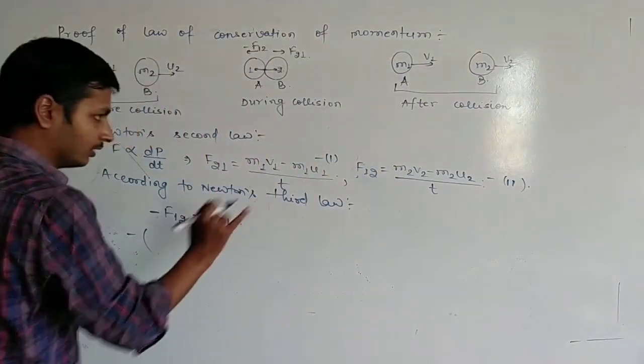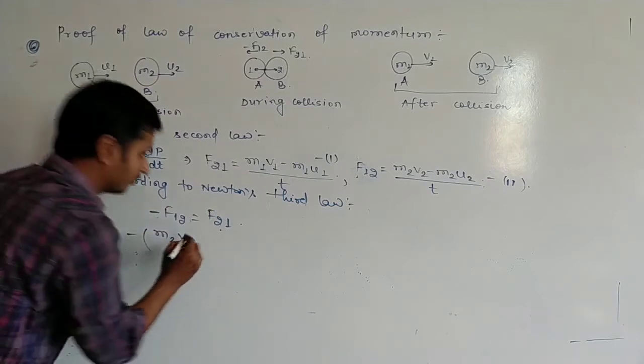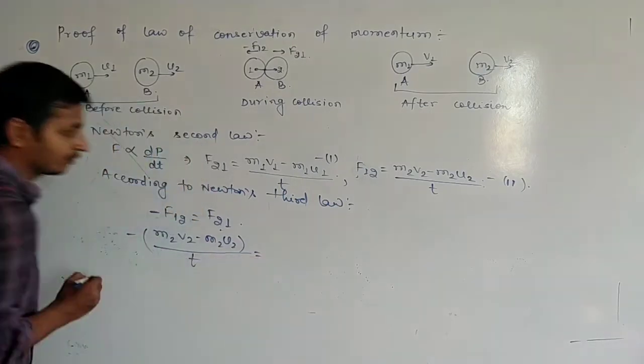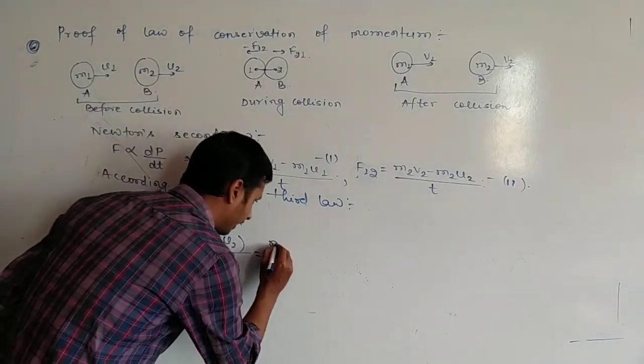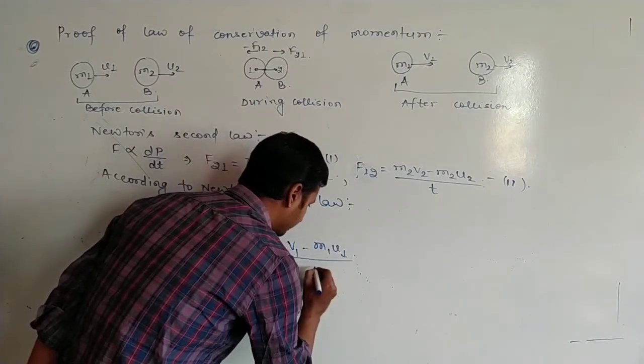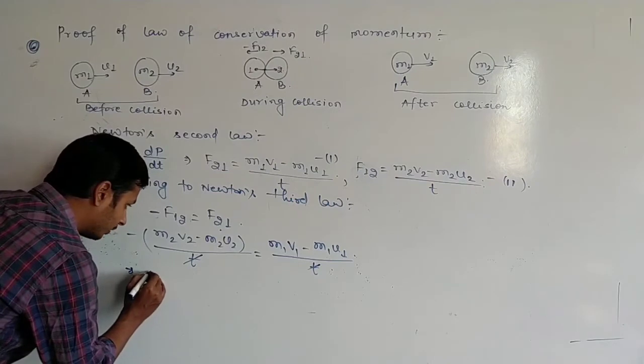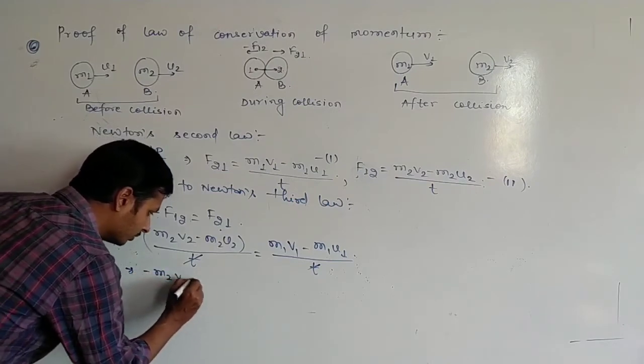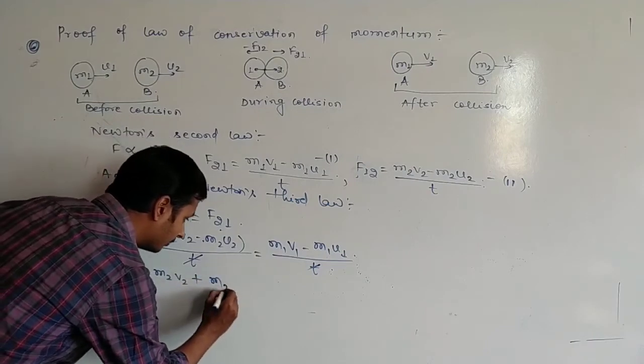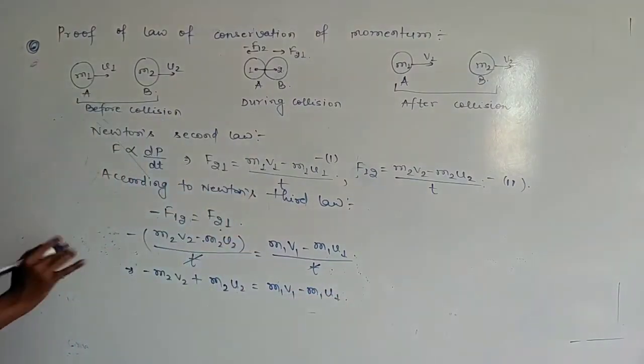Now if you equate, negative m2v2 minus m2u2 divided by t equals f of 2 due to 1, so m1v1 minus m1u1 divided by t. When you cancel out, negative m2v2 plus negative negative positive, then m2u2 is equal to m1v1 minus m1u1.